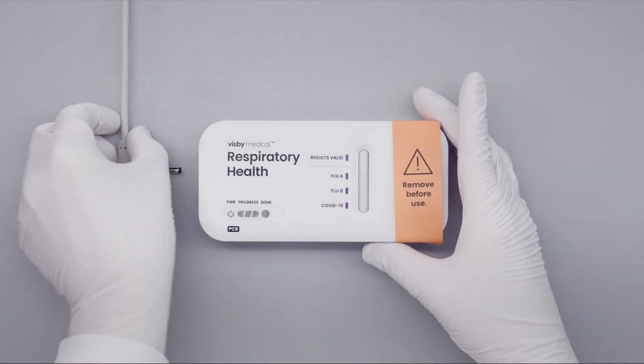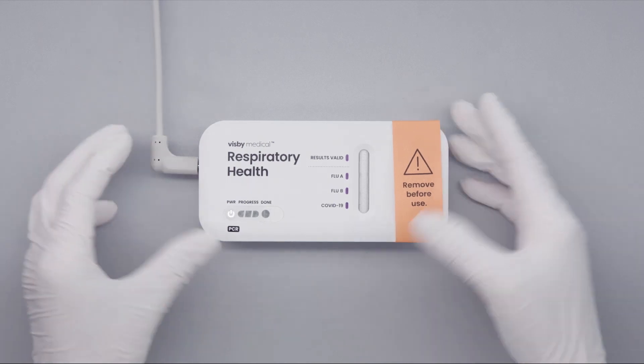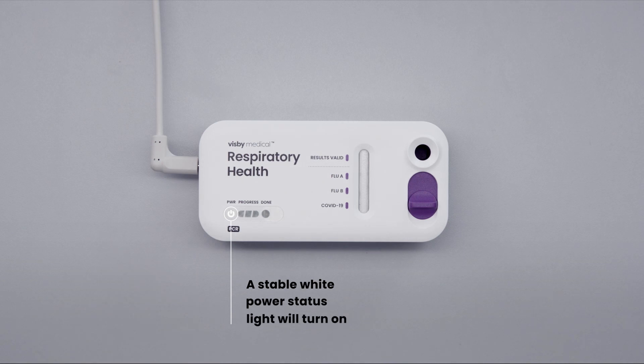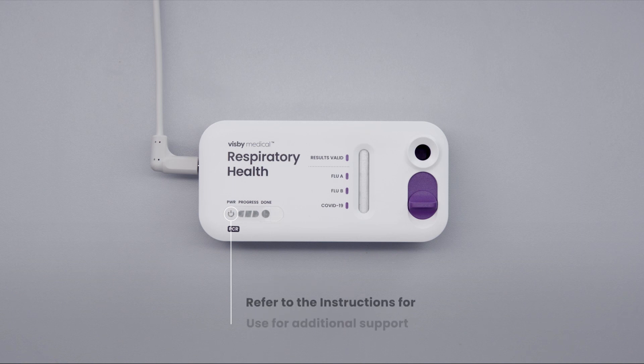Plug the device into the power adapter and remove the protective strip over the sample port. A stable white power status light will turn on, indicating the test is receiving power. If the power light does not turn on or if the power light blinks, refer to the instructions for use for additional support.